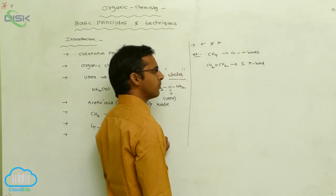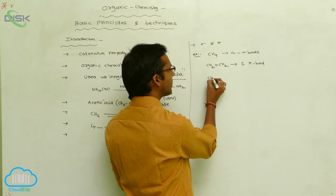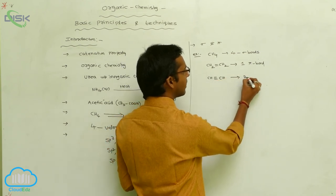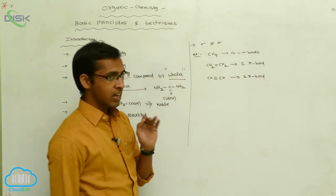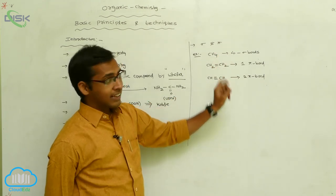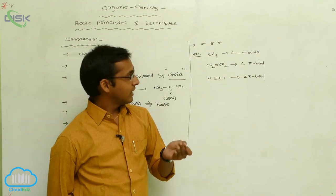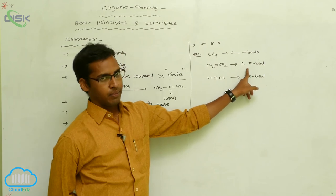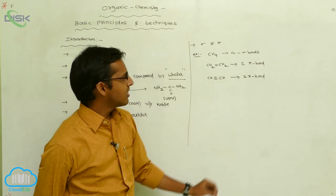Alkenes contain one pi bond. Alkynes contain two pi bonds. So generally, carbon compounds contain both sigma bonds and pi bonds. Alkanes contain only sigma bonds; alkenes contain sigma bonds and one pi bond; alkynes contain sigma bonds and two pi bonds.